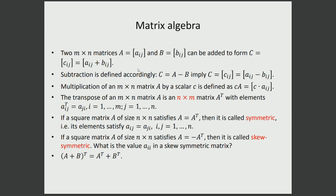Then we moved on to the basic arithmetic operations of matrices. In particular, we talked about addition and subtraction of two matrices. The two matrices we add or subtract must have exactly the same size — both have to be m by n — otherwise we cannot do these operations. For addition and subtraction, we go to the corresponding elements and perform the operation. If we have a scalar multiplied by a matrix, we multiply each element of that matrix by that scalar.